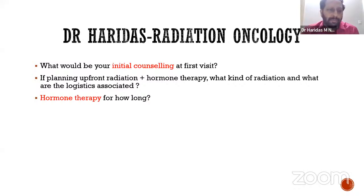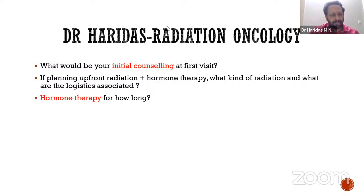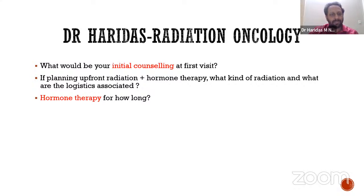From the counseling point of view, before counseling we would assess the performance status, age, comorbidities, and expected survival — there are indices that help predict five-year or ten-year survival based on comorbidities and general condition. This helps decide how aggressively to pursue radical treatment. Age is just a number; the patient needs to be taken into consideration regarding the impact of treatment on quality of life.